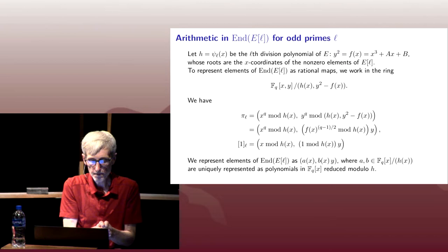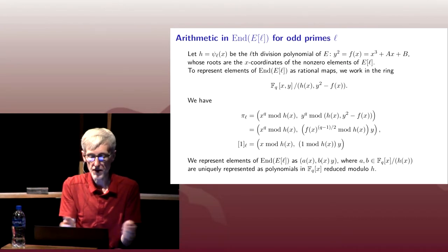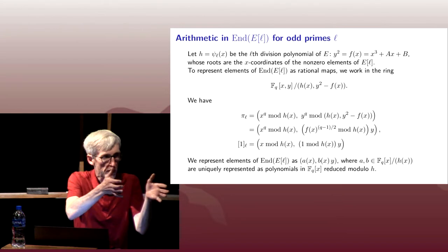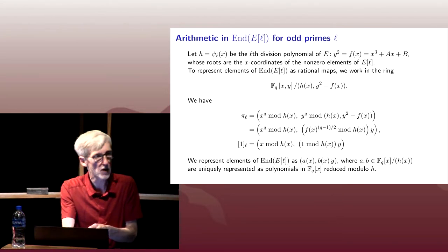How about 1? Well, 1 is pretty simple. What does it do? It doesn't do anything. It sends X to X mod H, it sends Y to Y, the image of Y in this ring, which if we want to represent it as some polynomial in X times Y, it should be 1 mod H times Y.